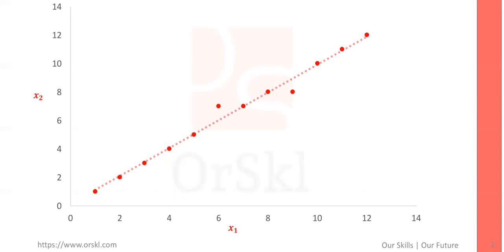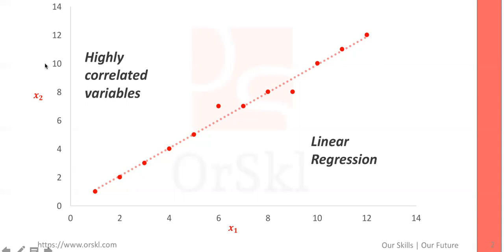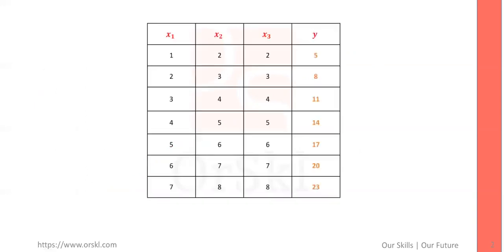So let us actually see with a simple data set with high correlation between the variables. Consider this data set — you have X1, X2, X3 variables. I just took seven data points so that it will be crystal clear to you guys. So when X1 is 1, X2 is 2, and X3 is 2, the Y variable value is 5. Similarly, 2, 3, and 3 gives value 8; 3, 4, and 4 gives value 11; so on and so forth.